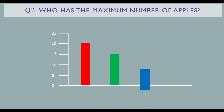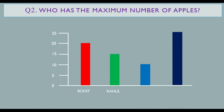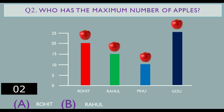These are the pillars beautifully shown on the graph. Which one has the maximum number of apples? Your options are: Rohit, Rahul, Bebo, and Goli. You have 30 seconds — comment your answer in the comments.